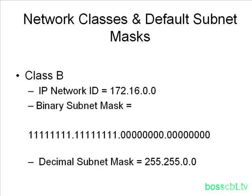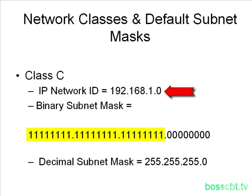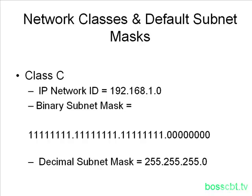You can probably guess how a class C network is going to look. Our IP network ID is 192.168.1.0. We know the first three octets are for the network, so those are all ones in binary, and we have just one octet of all zeros for the host portion. The decimal subnet mask is 255.255.255.0. These are the default subnet masks for class A, B, and C networks. You need to memorize them — they come up on the job a lot in configurations and on certification exams.